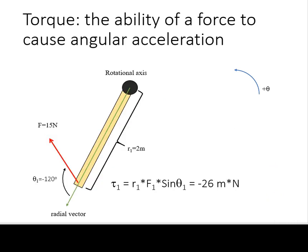Here is another example. The radial distance is 2 meters, the magnitude of the force is 15 newtons, and the angle from the radial vector to the force in this coordinate system is negative 120 degrees. The total torque by this force is negative 26 meter newtons.